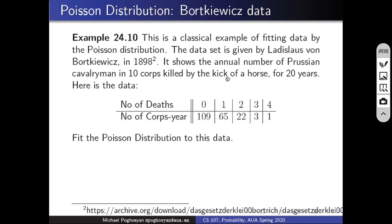The data covers 20 years. With 10 corps over 20 years, we have 200 corps-years. Out of those 200, in 109 cases we have zero deaths, in 65 cases one death, in 22 cases two deaths, and in one case three deaths. The problem is to fit the Poisson distribution to this data.